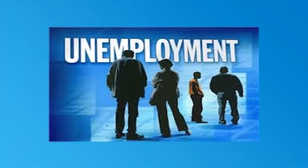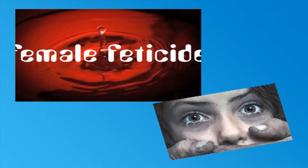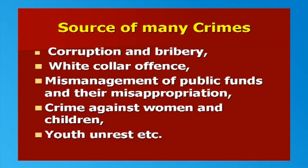For example, more than 60 percent of crimes are said to occur due to poverty and unemployment. Poverty and unemployment are considered to be responsible for even female foeticide and infanticide. Not only the economic factors of poverty and unemployment, but also the pace of development becomes the source of many crimes like corruption and bribery, white-collar offences, mismanagement of public funds and their misappropriation, crime against women and children, youth unrest, etc.